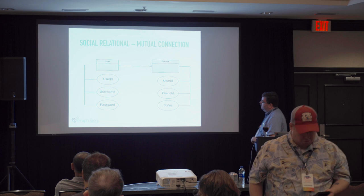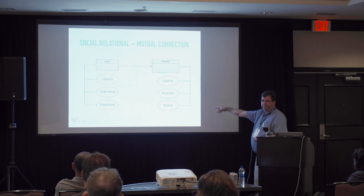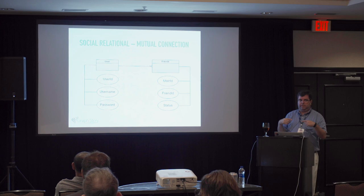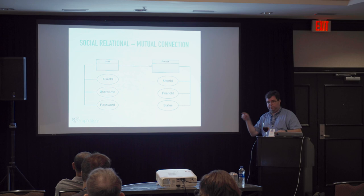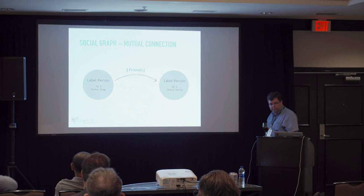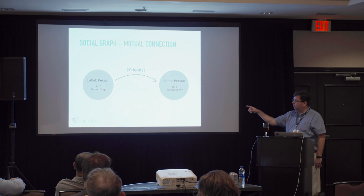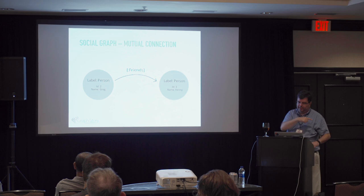In a relational model, you have a user with an ID, username, and a hashed password — no cleartext passwords. Then a Friends table with user ID, friend ID, and status. That's the mutual-style connection, like Facebook where you're mutually connected. In a graph, you'd say Greg and Kenny are friends, using a directional relationship. Even though it's directional, it still represents the relationship going both ways.